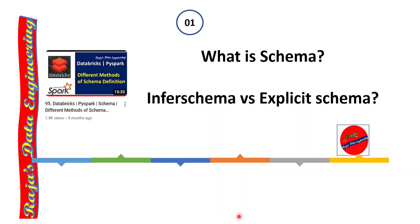Let's get started with the first question: what is schema, what is infer schema, and what is the difference between infer schema and explicit schema? Schema is nothing but defining the structure of a dataset or a data frame in Spark development. One data frame would contain a number of columns and also data types. So schema is going to tell what is the column name, what is the data type, and whether it can accept null values or not.